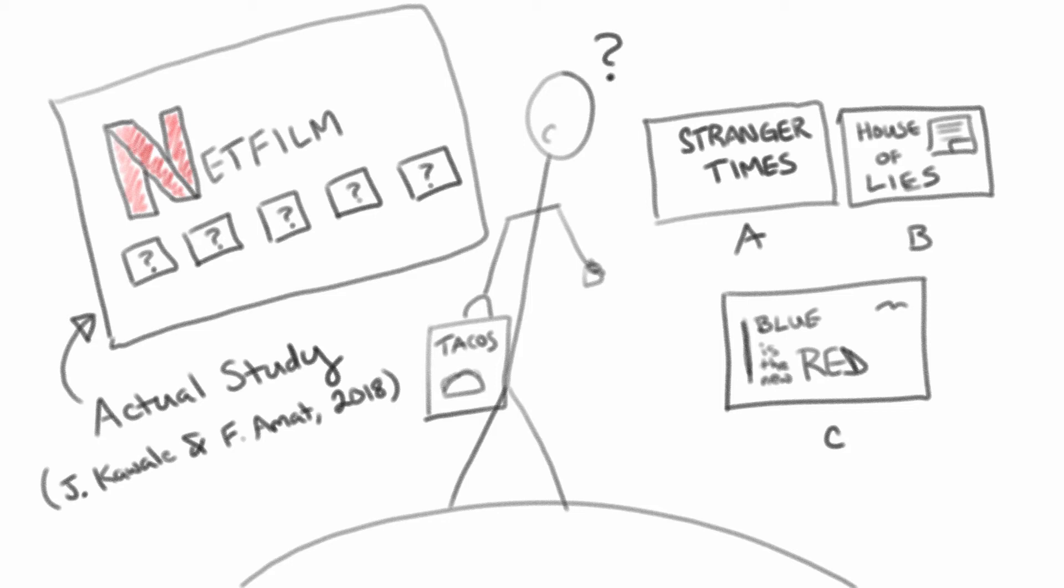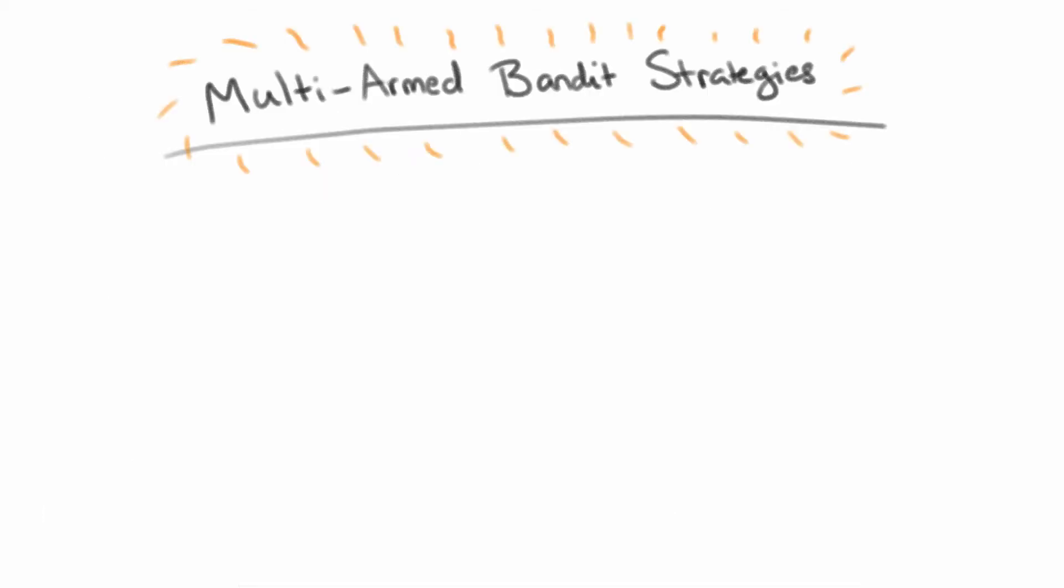But which lever on this slot machine do we pull? We may have a number of potential recommendations and possibly multiple presentations of each one. We want to make the most of this opportunity. Which image do we present them?